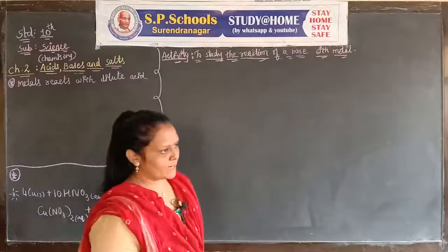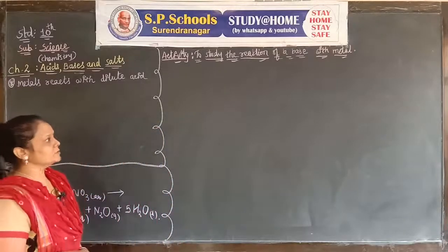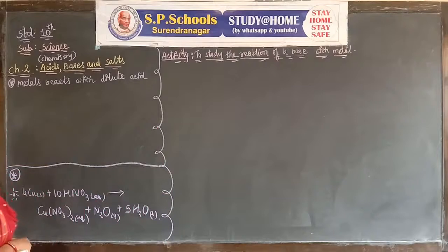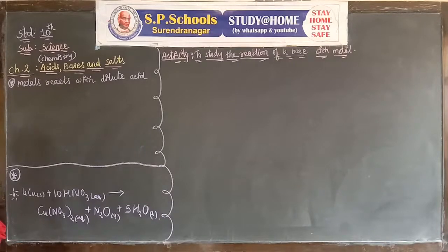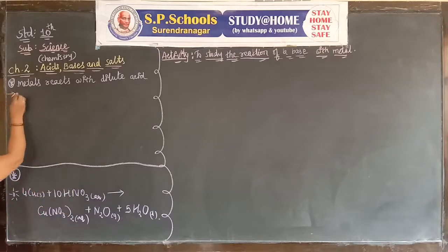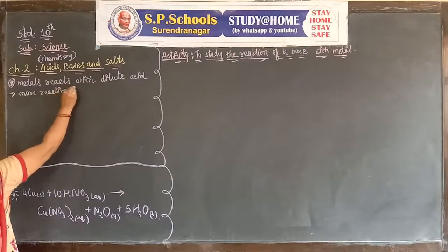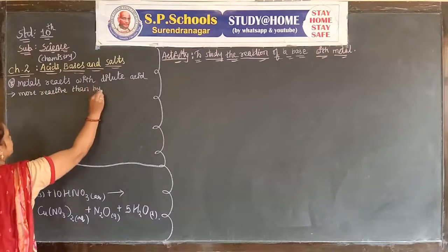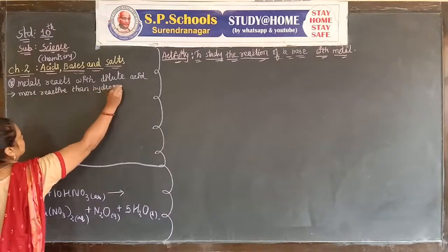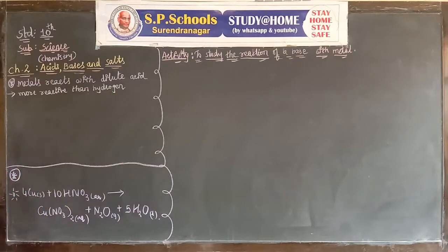In Chapter 2, Acids, Bases and Salts, we go through another question. The question asks us: when a metal reacts with dilute acid, which metal liberates or evolves hydrogen gas? Metals that are more reactive than hydrogen will liberate hydrogen gas during the reaction. Let's write equations for it.